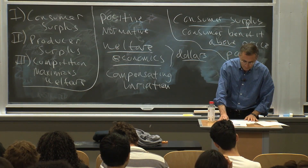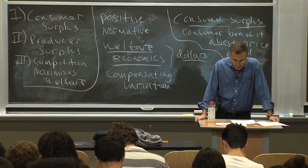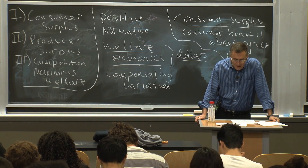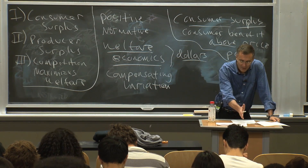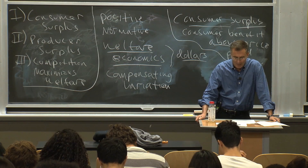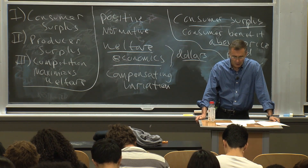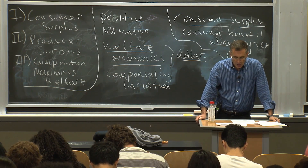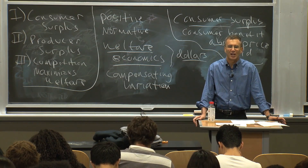So here's the consumer surplus. Let's say my daughter's willingness to pay — for the zeroth Katy Perry song, she was willing to pay $5.